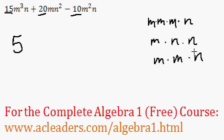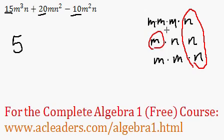So what do they all have in common? One n and one m. Therefore we can basically factor out an m and an n. So we can open the bracket here.